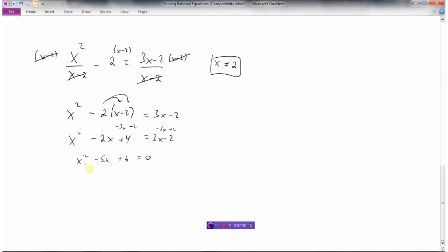This is an easy quadratic equation to solve because I can factor it. Two numbers that multiply to 6 and add to minus 5 would be negative 3 and negative 2. So now I have x minus 3 times x minus 2 is 0. The only way you can multiply two things and get 0 is if one of these brackets is 0.